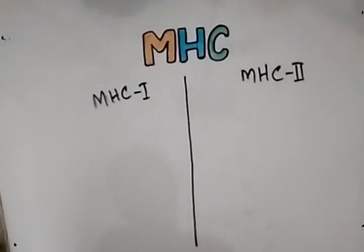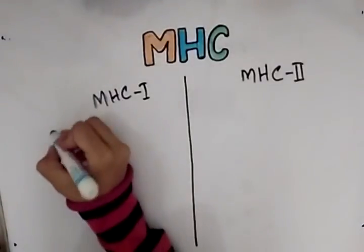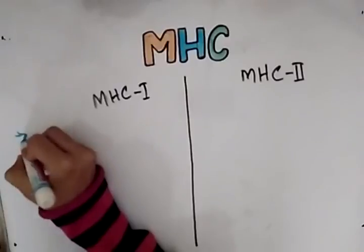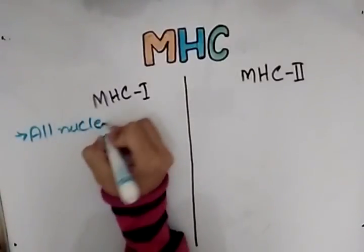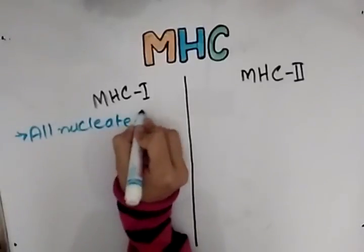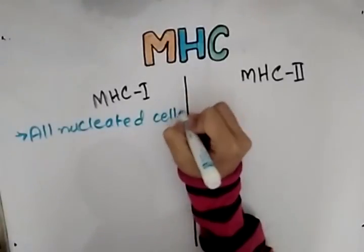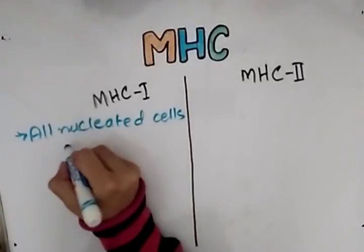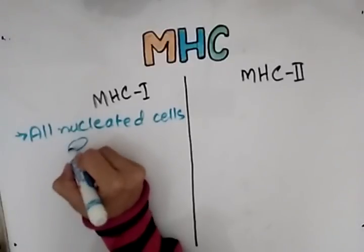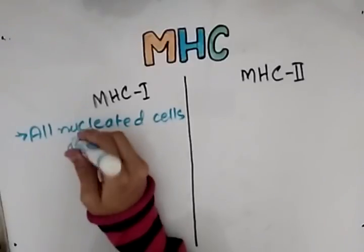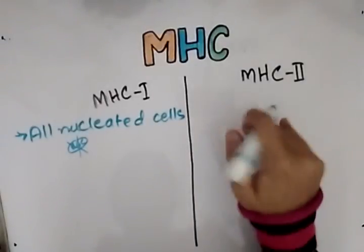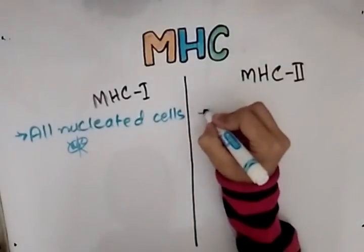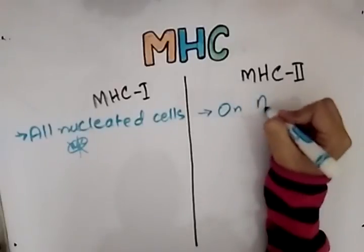MHC1 proteins are present on all nucleated cells. For example, RBCs are not nucleated, so MHC1 proteins are not present on RBCs. MHC2 is present on antigen presenting cells.